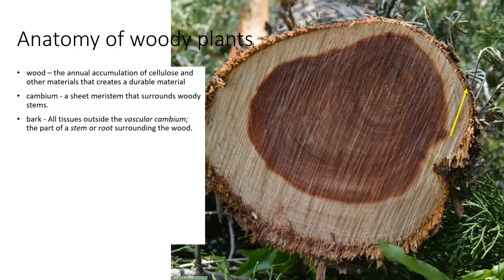We have what we call bark. Bark is all tissues outside of the vascular cambium. It's the part of the stem or roots surrounding the wood. We do have woody roots as well as woody stems, and they're all covered with the bark.